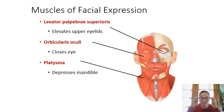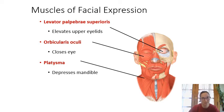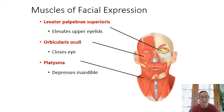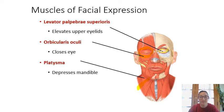Levator palpebrae superioris is on top of the eyelid and lifts the upper eyelid — levator means elevate, palpebrae means eyelids, and superioris means the top one. Orbicularis oculi goes all the way around the eyeball and closes the eye. So levator palpebrae superioris opens the eyelid, and orbicularis oculi closes it. Platysma in the neck helps depress the mandible — pulling the jaw down to open the mouth.